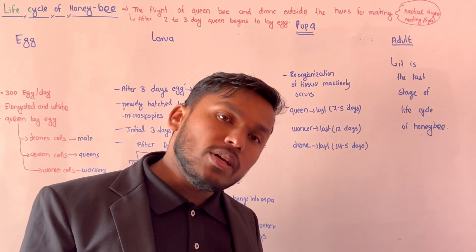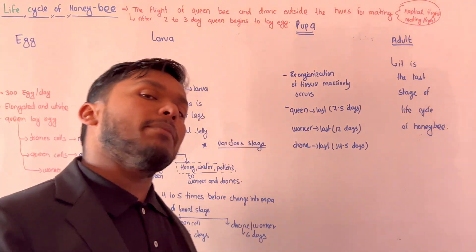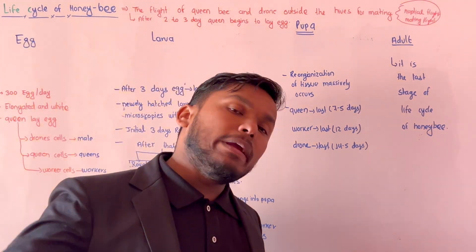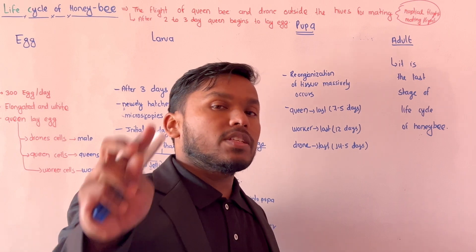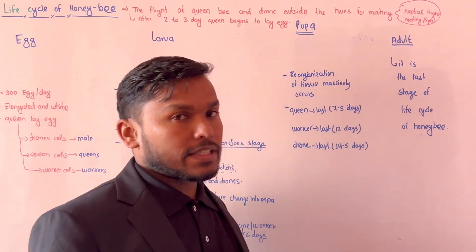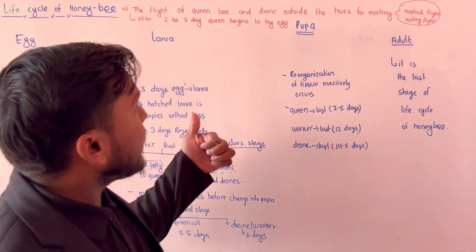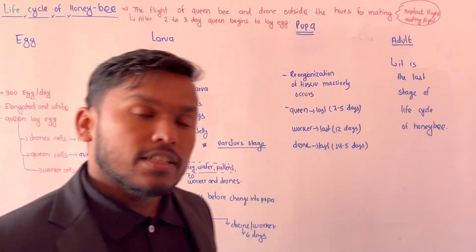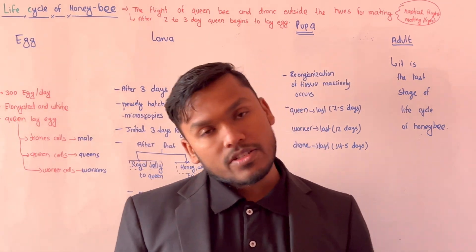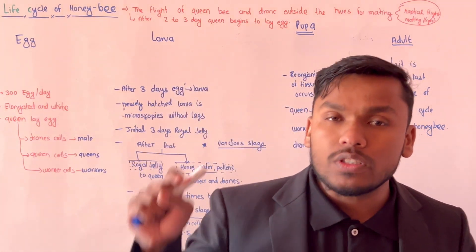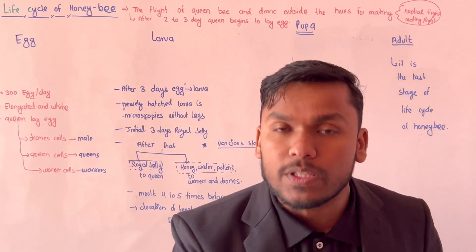The Queen and drone — the main motive of the mating flight is reproduction. This is the main purpose of mating.